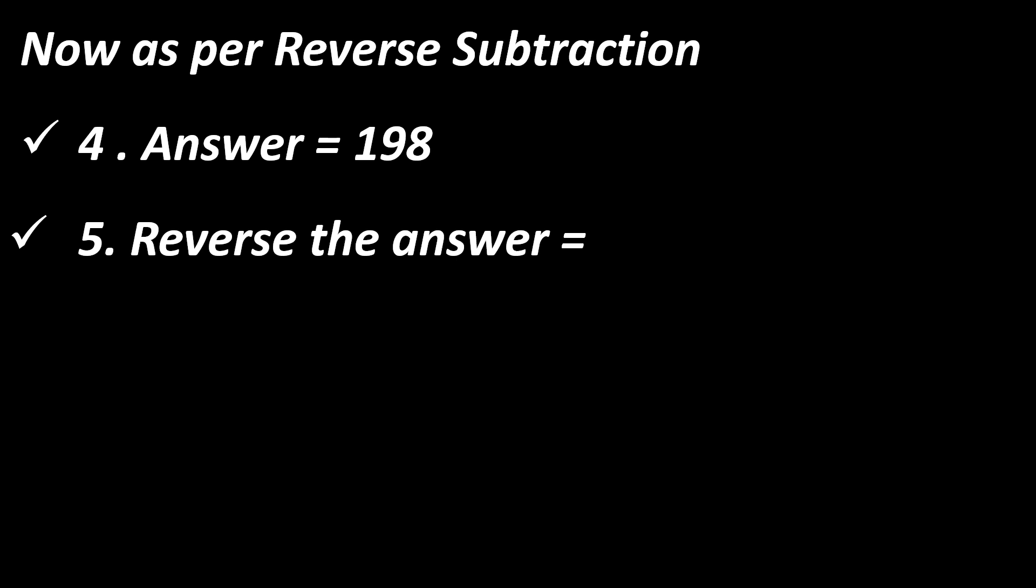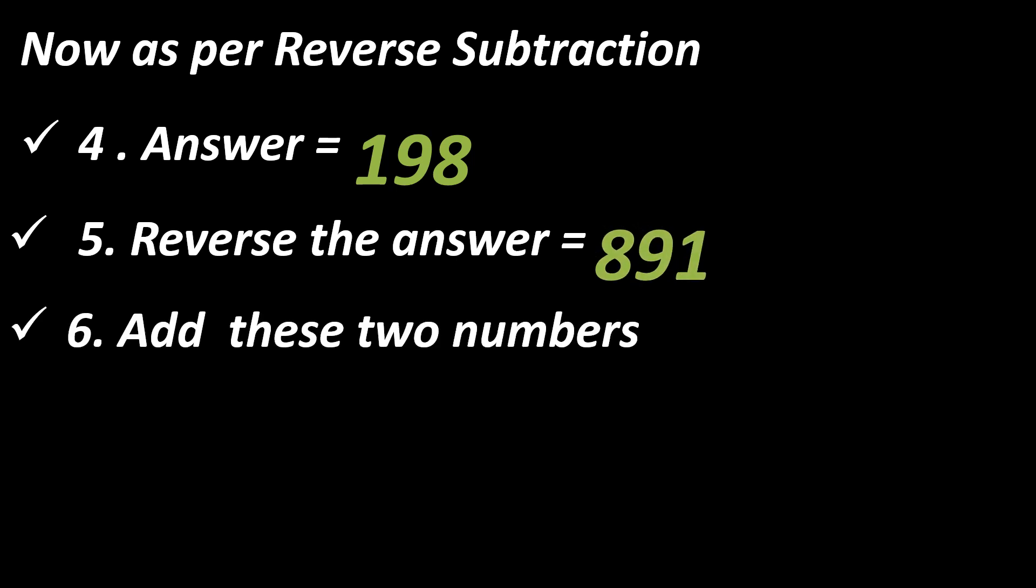Now we have two numbers again: 198 and reverse of it 891. We need to add these two numbers and see the magic. Got your universal answer: 1089. You can try this trick with any three digit number.